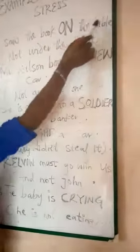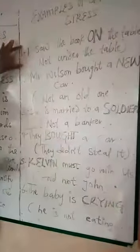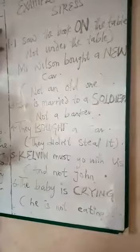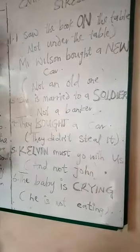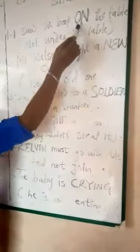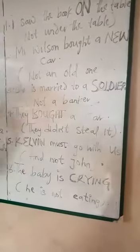Let me teach you more with some examples of sentence stress. Number one says: I saw the book on the table. If you look at this grammatical construction, can you tell me the word that is stressed? The word that is stressed there — so with this, you being the reader, you'll be able to know that this particular sentence is talking about where the book was found.